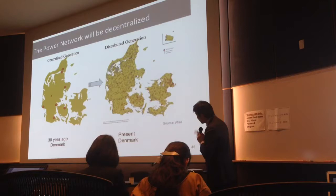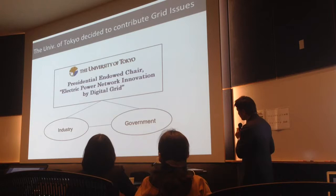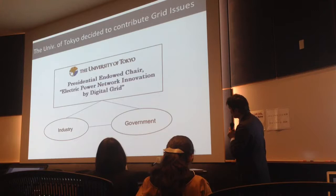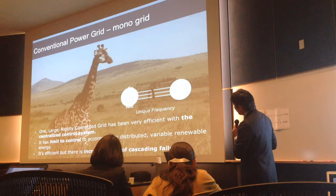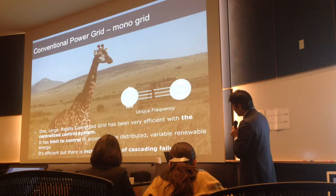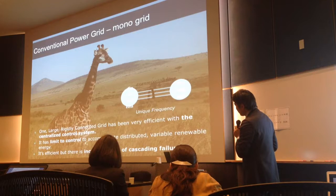These are the situations of energy generation: centralized to decentralized. To address those issues, the University of Tokyo has established a project called the Presidential and Auto-Chair Electric Power Network Innovation by Digital Grid. The concept is like this: the conventional power grid is a monogrid — one frequency — it is a centralized system with very high efficiency.